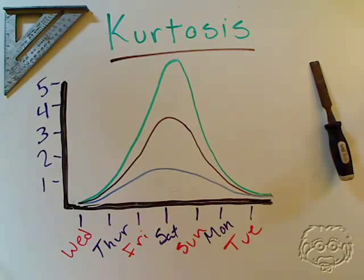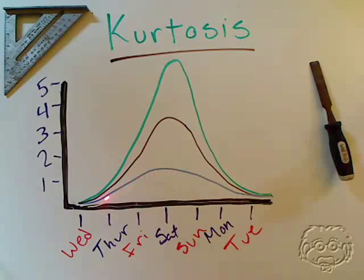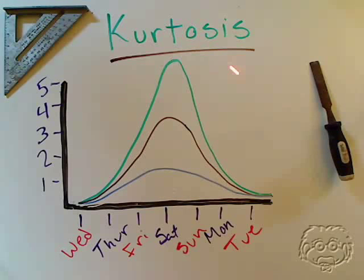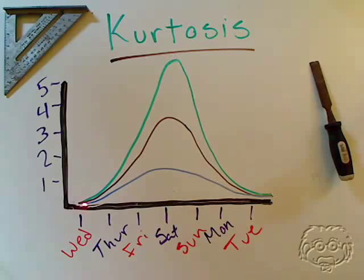So that must mean that this curve here is an example of high kurtosis, whereas this blue one here, which just really doesn't go up that much, must be an example of very low kurtosis. When we're looking at kurtosis, we want to know: is the data peaked or is the data flat? And that's what we're measuring with kurtosis.